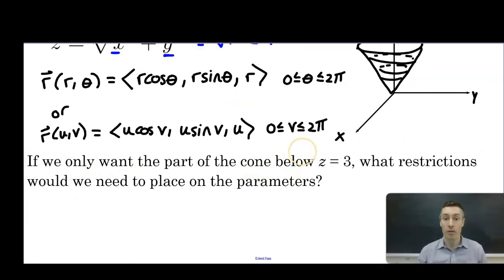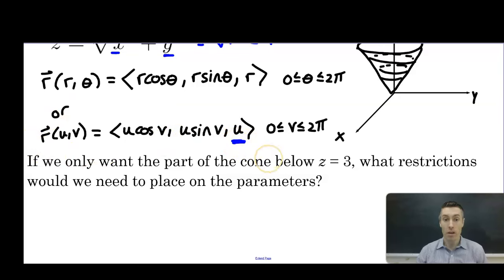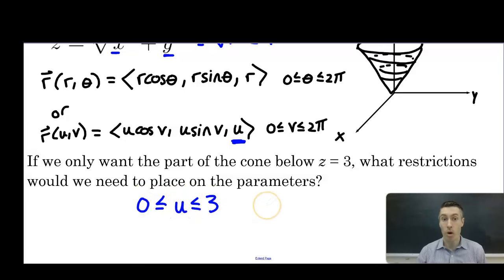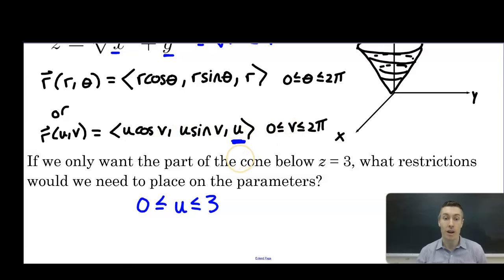If we only want the part of the cone below z equals 3, what restrictions do we place on the parameters? Our z component is just u, so we want u less than or equal to 3, and greater than or equal to 0 for a complete restriction. So then we'd have a v restriction of 0 to 2 pi and a u restriction of 0 to 3. This is helpful because as we shift into surface integrals, these restrictions on u and v will become our bounds of integration.